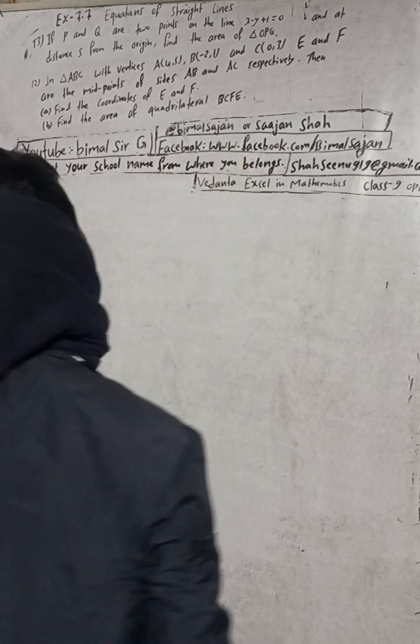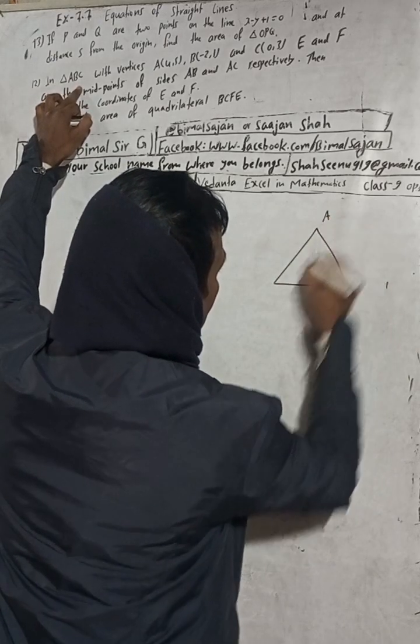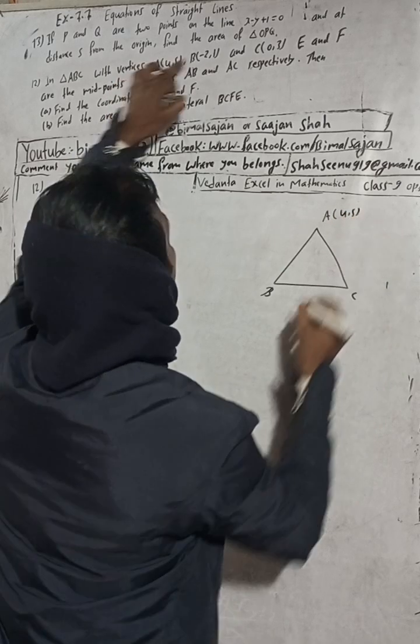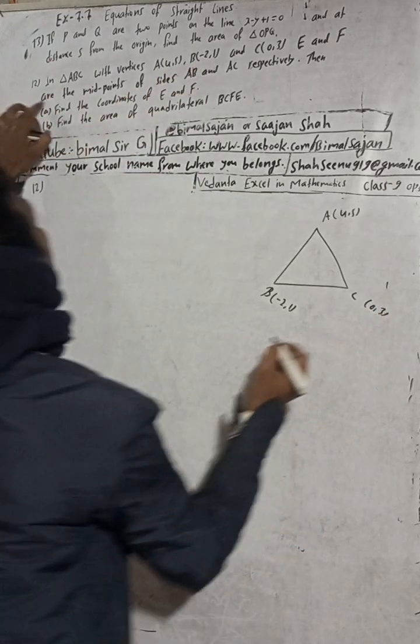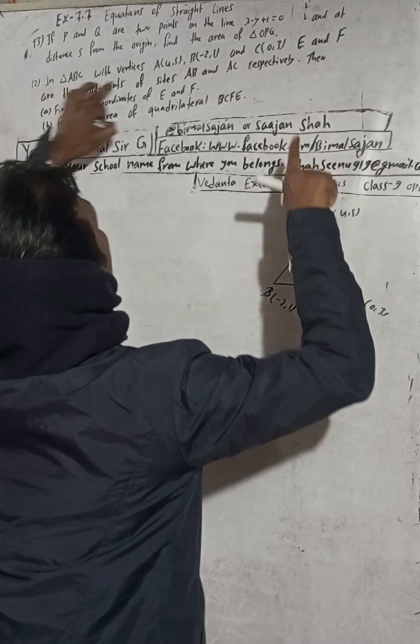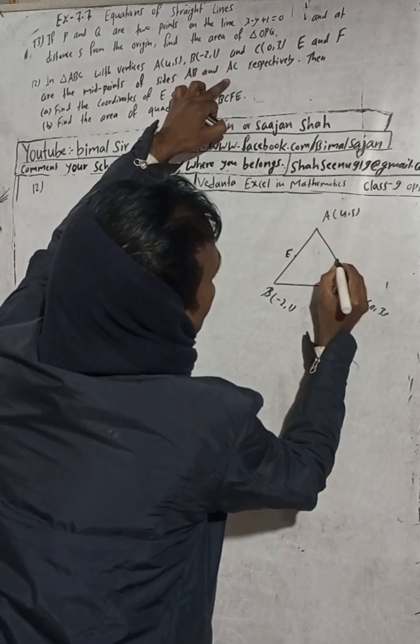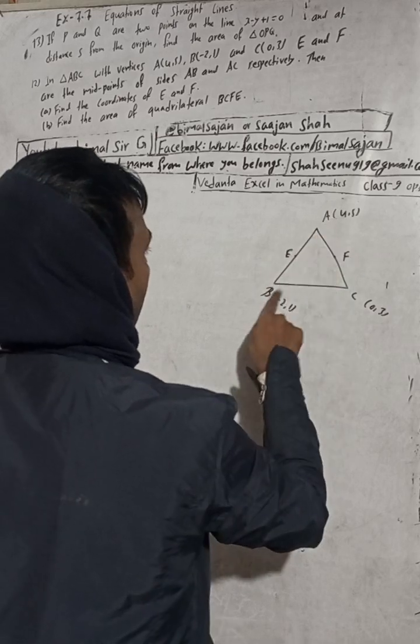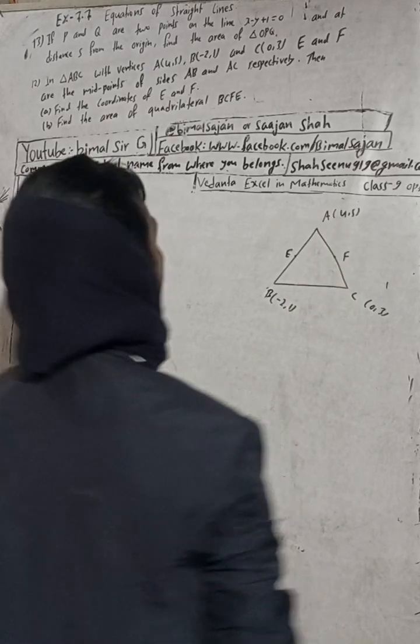In triangle ABC, point A is at (4,5), point B is at (-2,1), and point C is at (0,3). E and F are the midpoints of sides AB and AC respectively. E is the midpoint of AB and F is the midpoint of AC. We need to find the coordinates of E and F.